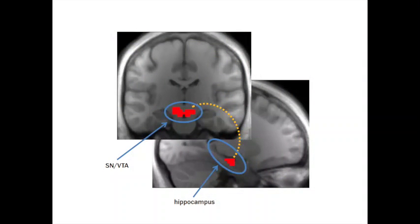What's also interesting is that curiosity seems to increase interactions between the SNVTA and the hippocampus. And these interactions are related to people's ability to learn these interesting materials, and also uninteresting materials that are presented while people are in a curious state.